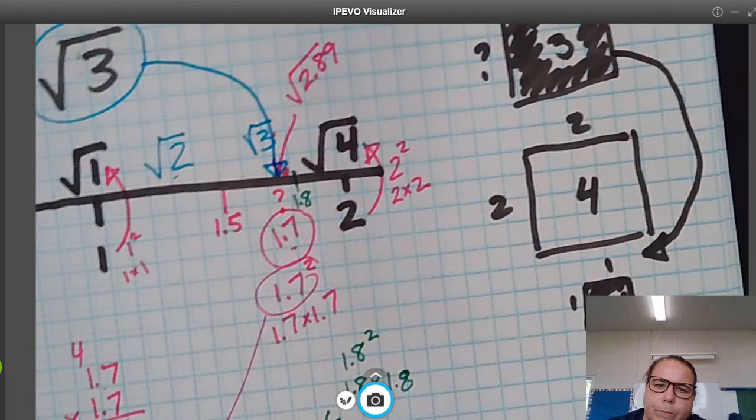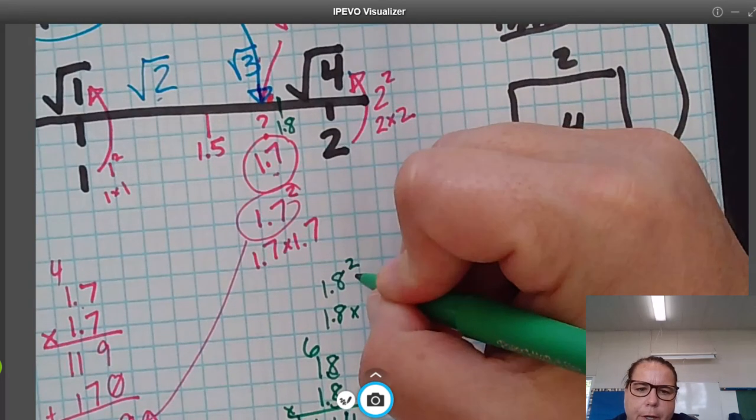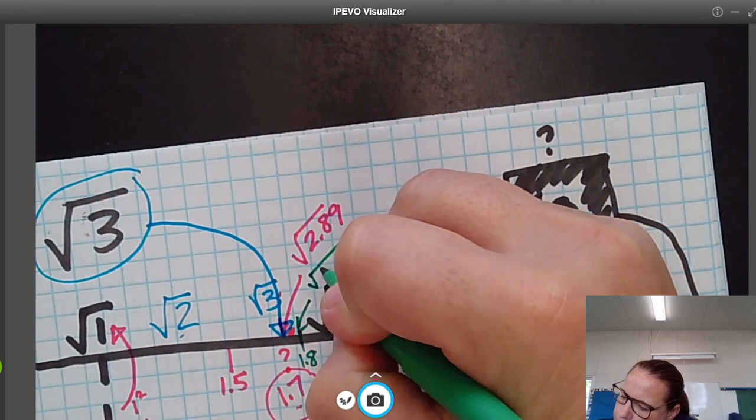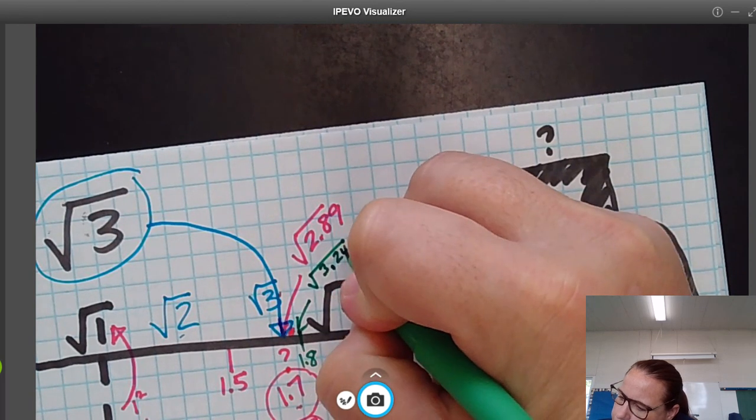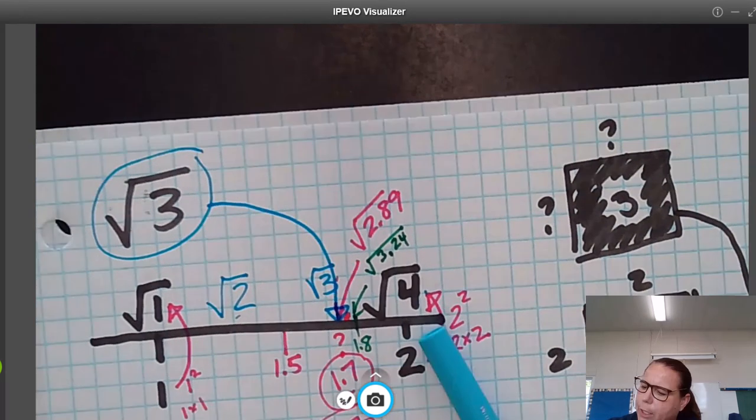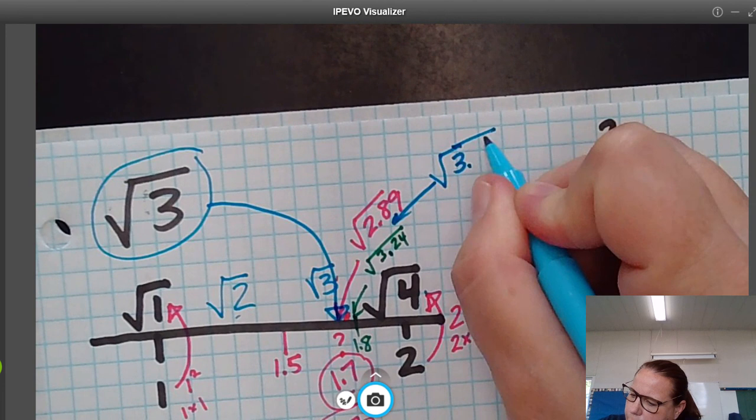Now we can say that 1.8 squared is 3.24, so that goes right here, the square root of 3.24. And hopefully now you can tell that the square root of 3 is between these two values. That's where the square root of 3 is.